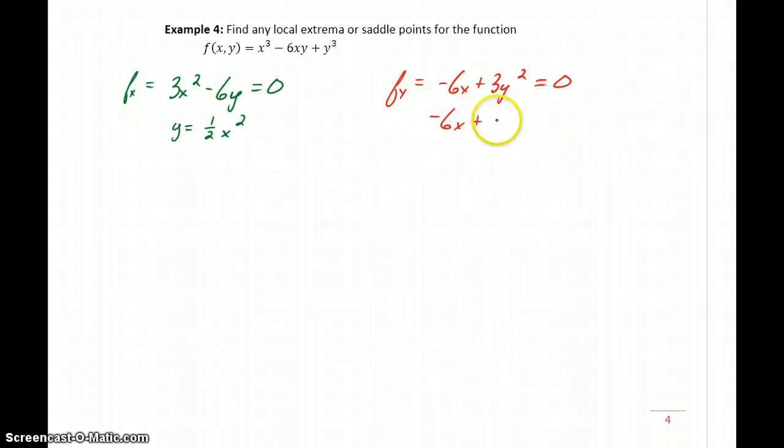So we'll rewrite this as negative 6x plus 3 times 1 half x squared, that quantity squared, equal to 0. So using substitution, we've now got this down to an equation in one variable, which will be negative 6x plus 3 fourths x to the fourth when we square the 1 half and the x squared, equal to 0.